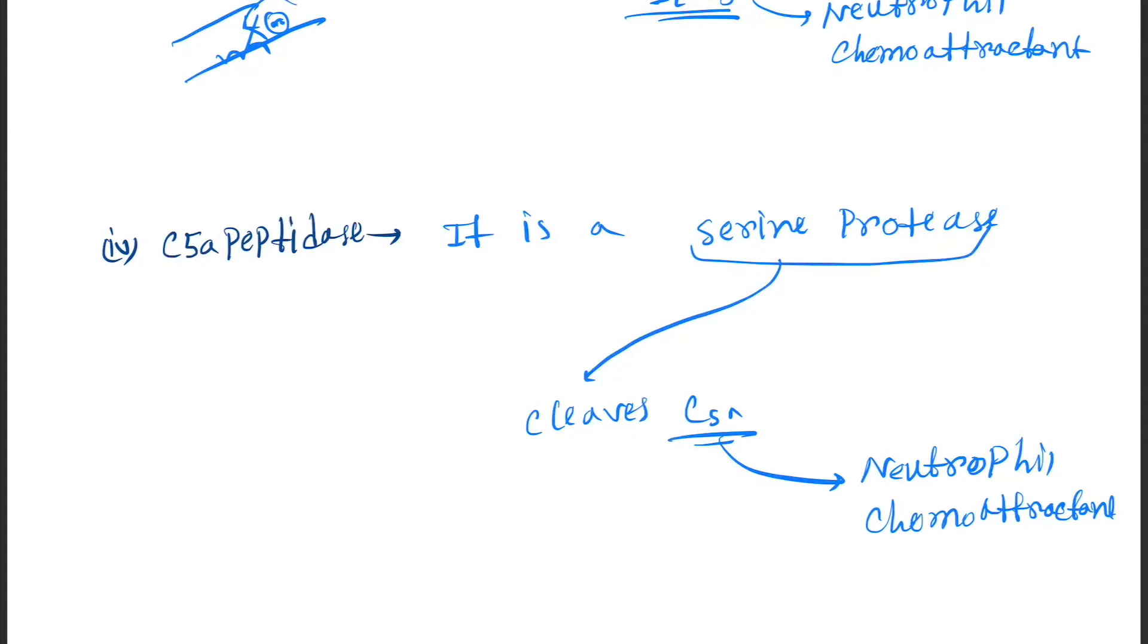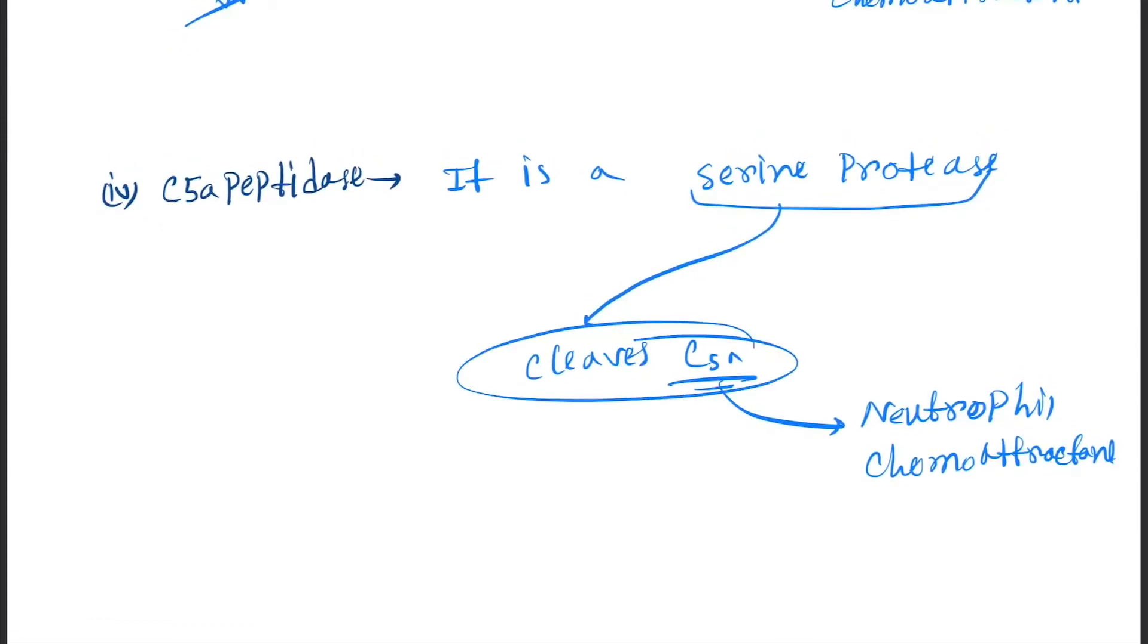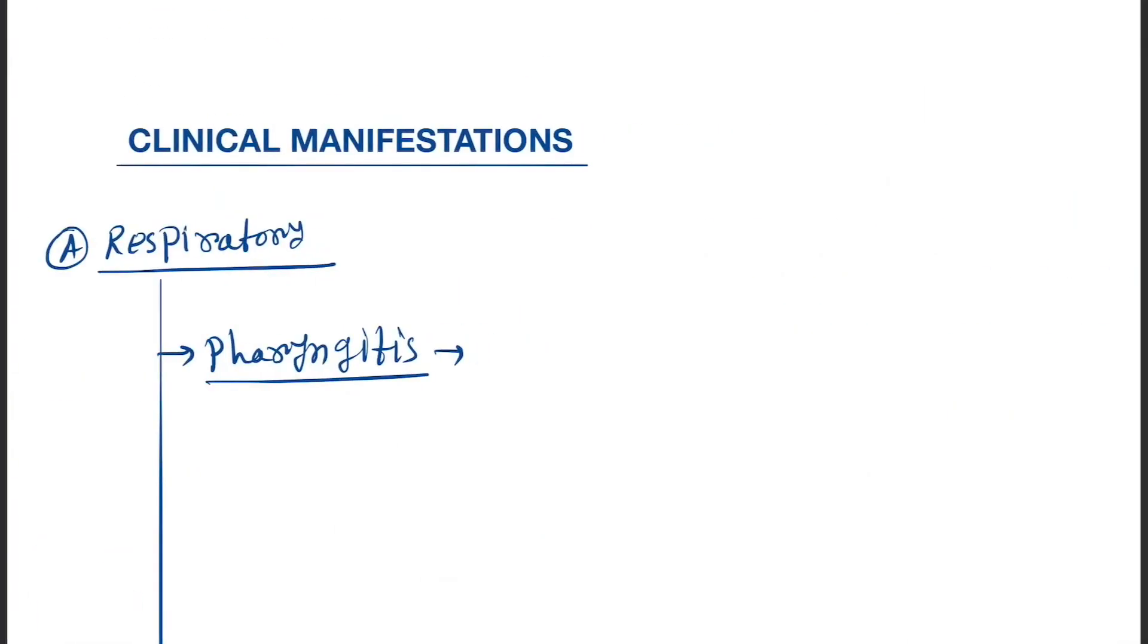Next is C5a peptidase. It is a serine protease. It cleaves the C5a complement and it is also a neutrophil chemoattractant. So in the infected side, neutrophils will not be able to come there.